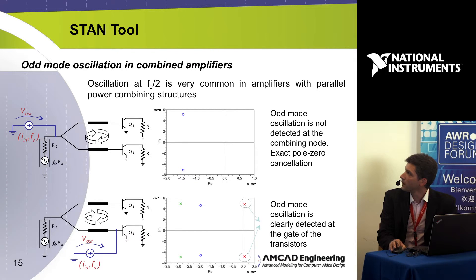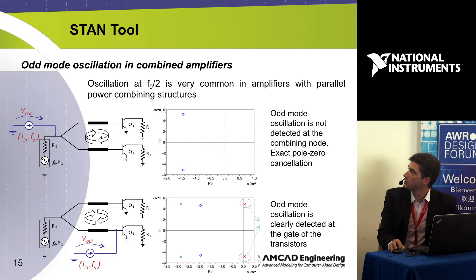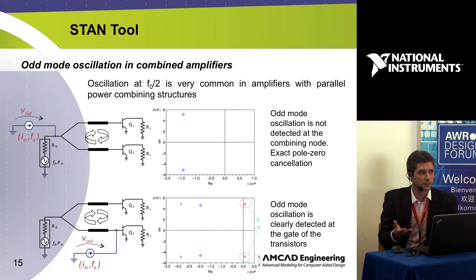For amplifiers with combined structures — for example, two transistors in parallel — we use specific tips to identify the oscillation mode. If we connect the probe at the common node before the power divider, an odd-mode oscillation will not be detected because it recombines in-phase at the divider. Connecting the probe at a transistor node allows us to detect the oscillation. With these two results we can determine whether we have an even-mode or odd-mode oscillation, which guides our choice of stabilization strategy.